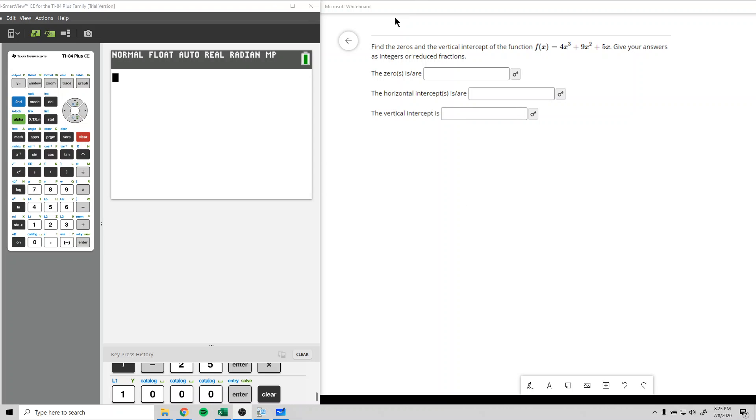This question is asking us to find the zeros and the vertical intercept of the function f of x equals 4x cubed plus 9x squared plus 5x. Give your answer as integers or reduced fractions.